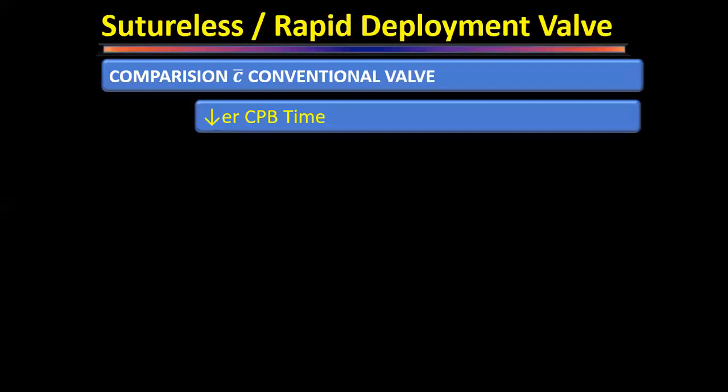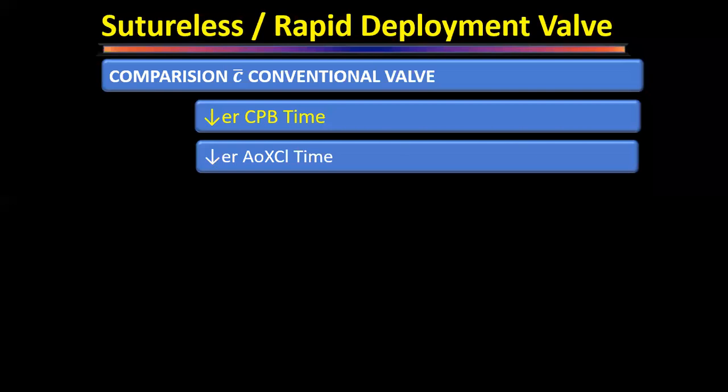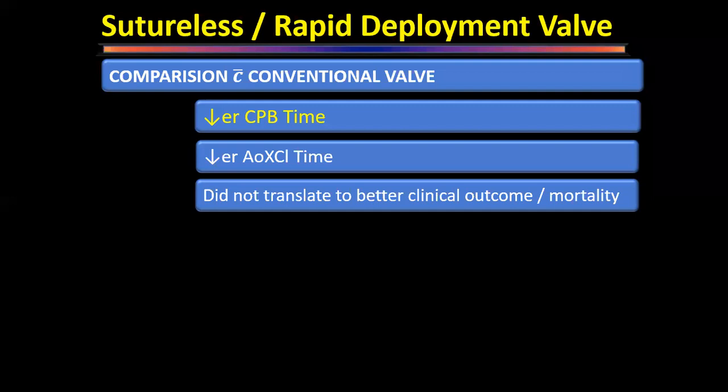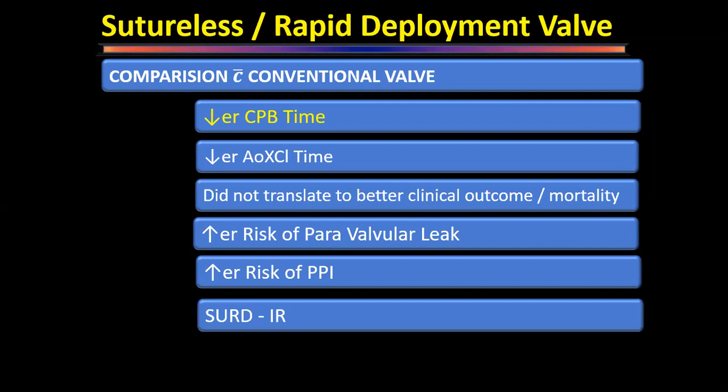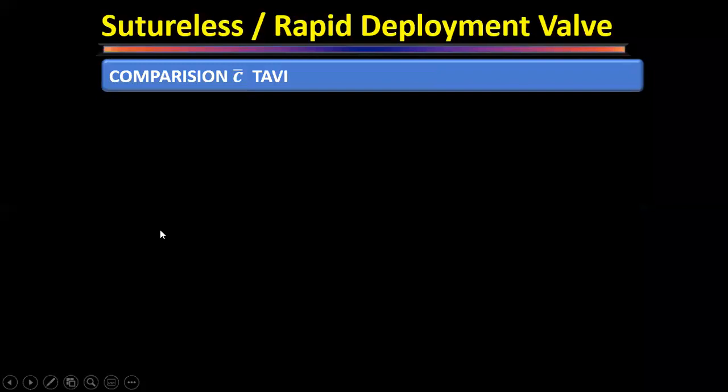Compared with conventional valves, sutureless valves have lower cardiopulmonary bypass time and lower cross-clamp time, but these do not translate to better clinical outcomes or mortality. They have higher risk of paravalvular leak and higher risk of pacemaker implantation compared with conventional valves. Their registry is called the SURD — Sutureless and Rapid Deployment Valve International Registry.